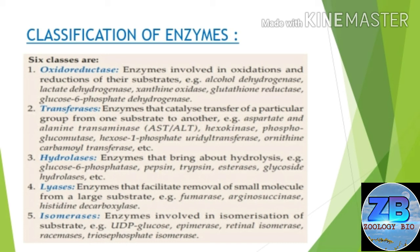The fifth one is isomerases — enzymes involved in isomerization of the substrate. For example, UDP-glucose epimerase, retinal isomerase, aconitase, and triosephosphate isomerase.